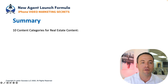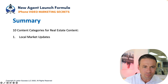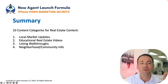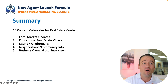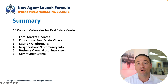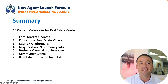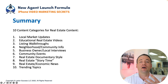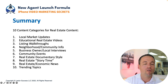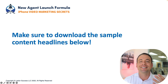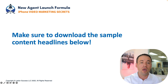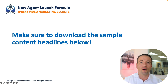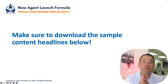In summary, here are the 10 categories: number one, local market updates; number two, educational real estate videos; number three, listing walkthroughs; number four, neighborhood and community info; number five, business owner and local interviews; number six, community events; number seven, real estate documentary style; number eight, real estate story time; number nine, real estate or economic news; number ten, trending topics. Make sure to download the sample content headlines PDF linked below so you can leverage them and create your own.